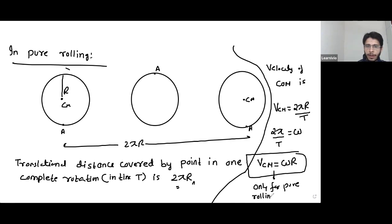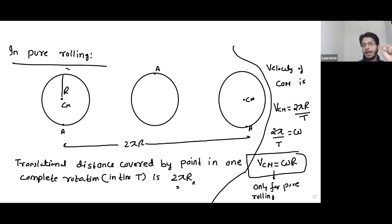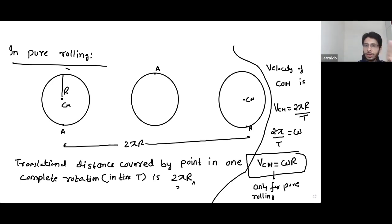The tangential velocity V equals omega R is valid for all types of cases — everywhere in circular motion, tangential velocity is angular velocity multiplied by the radius of the path. But velocity of center of mass equals omega R is valid only in case of pure rolling. If the tire gets stuck in mud or the car skids, this relation is not valid.